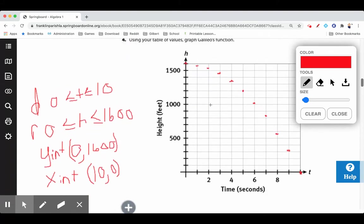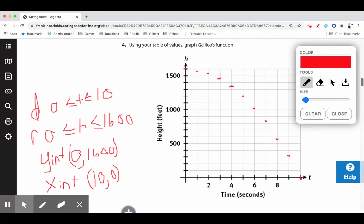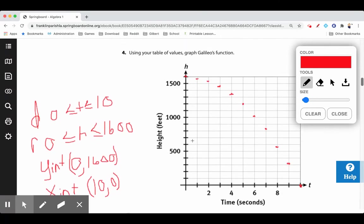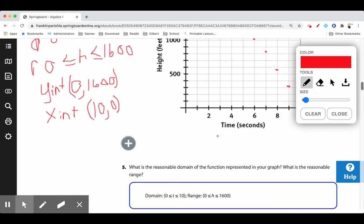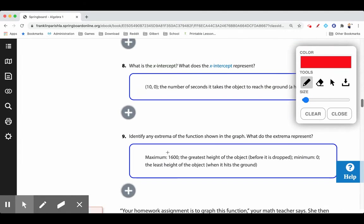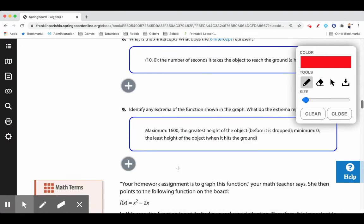What are the extrema? The minimum and maximums. We have minimum and maximums on this one because we have endpoints. Unlike when we'd had the graphs that had arrows at the end, sometimes we didn't have minimum maximums depending on what the shape of the graph was. This one we do have an absolute minimum and an absolute maximum. Absolute maximum is 1600, absolute minimum is zero. Minimum and maximum are also known as the extrema—minimum and maximums where the extreme points, the very top and the very bottom.